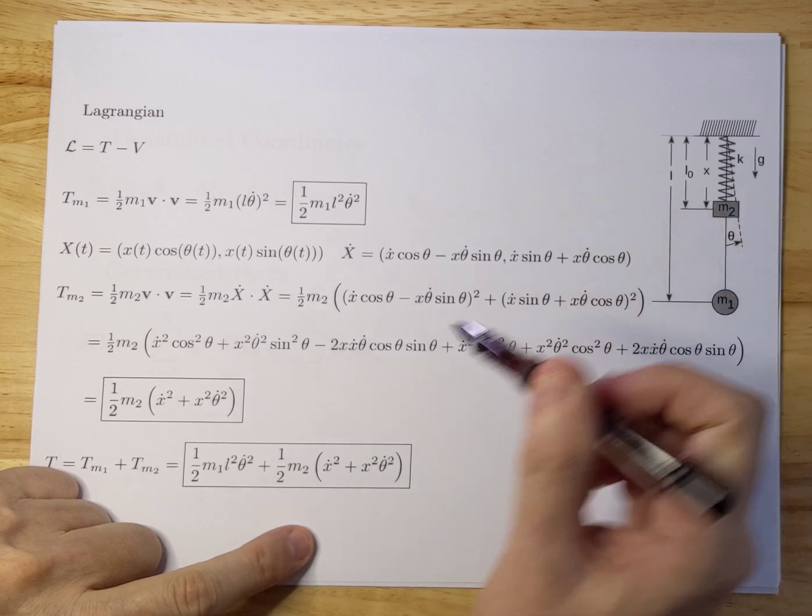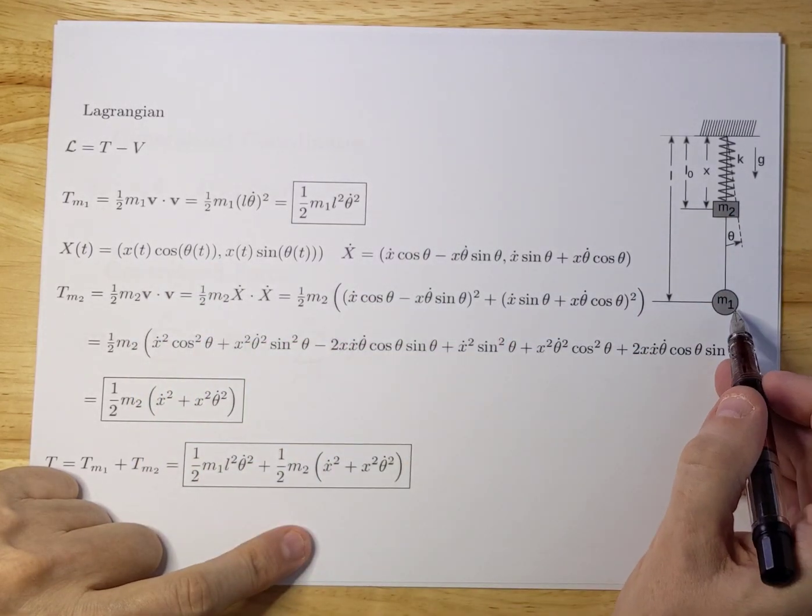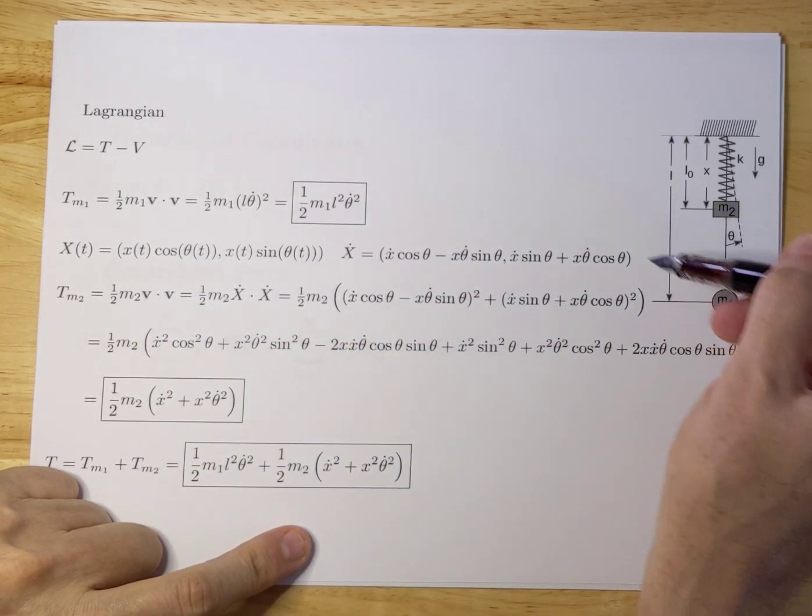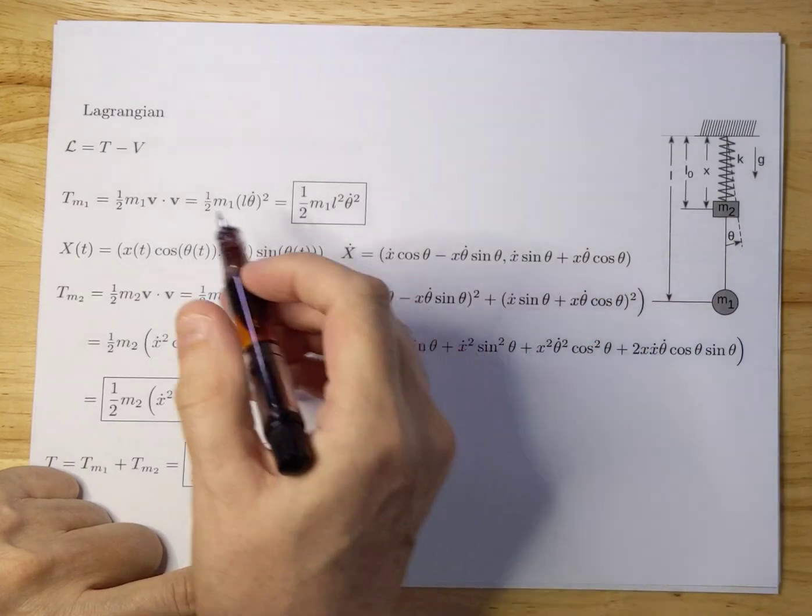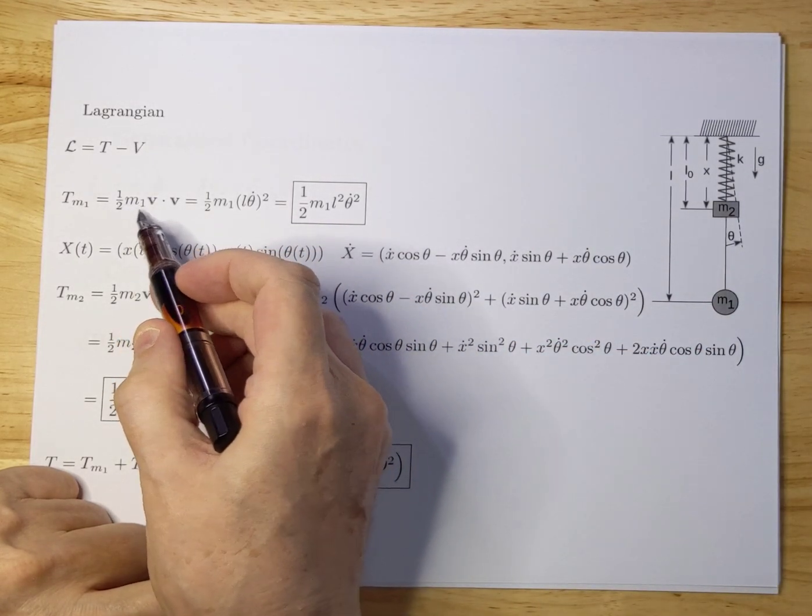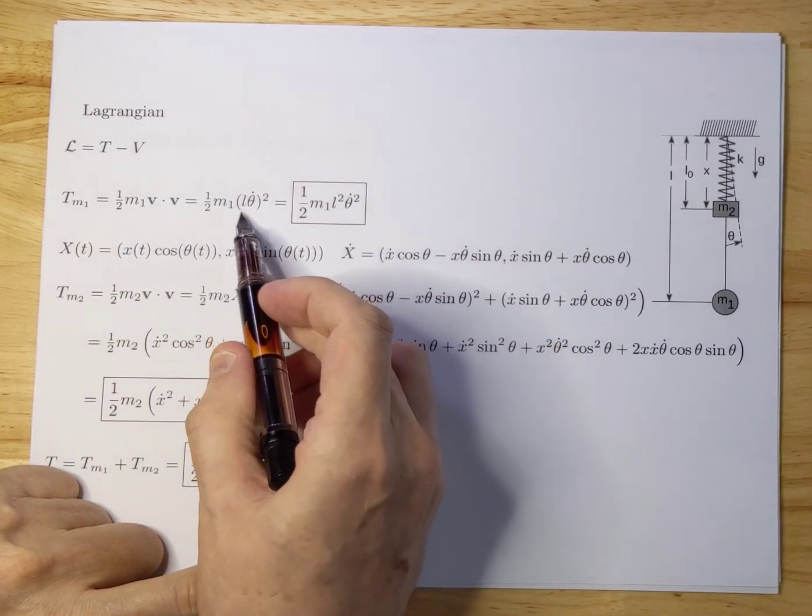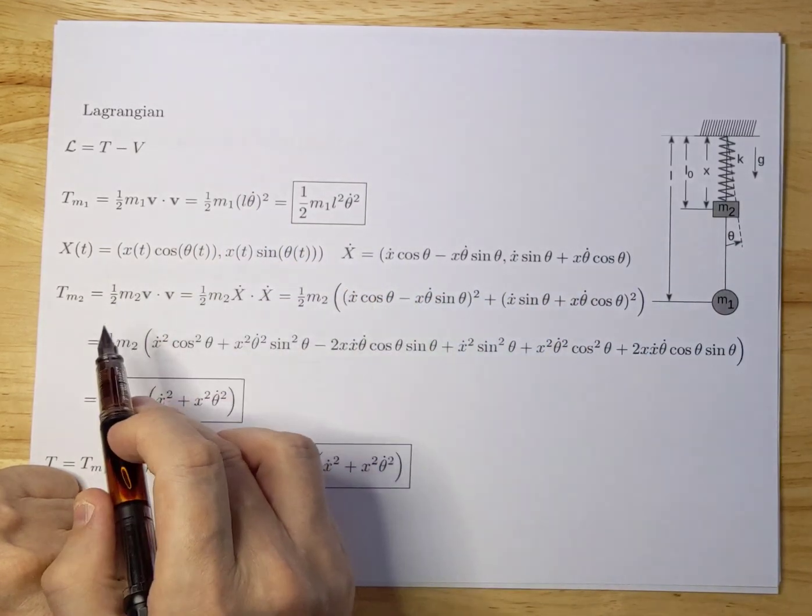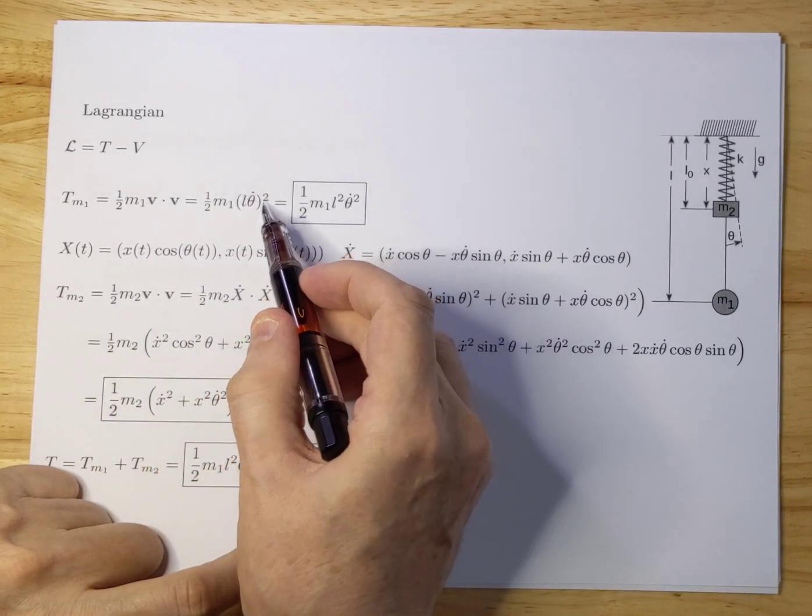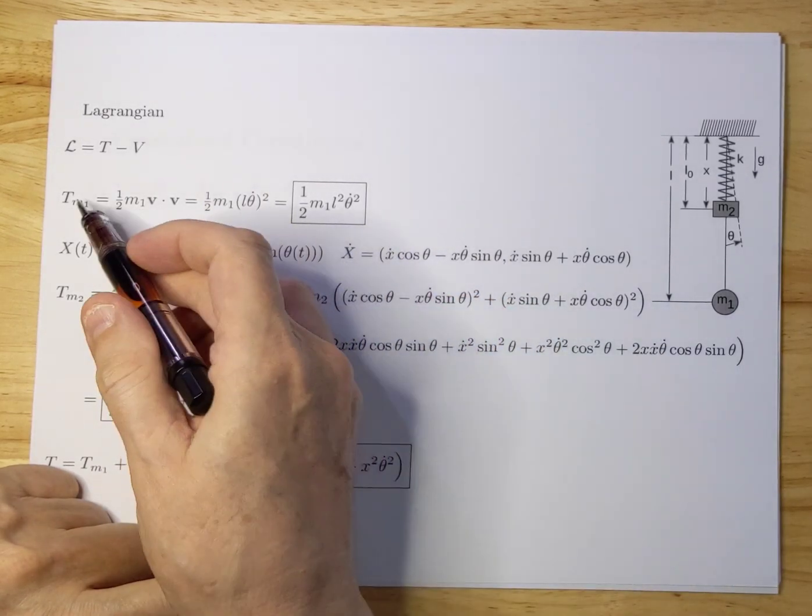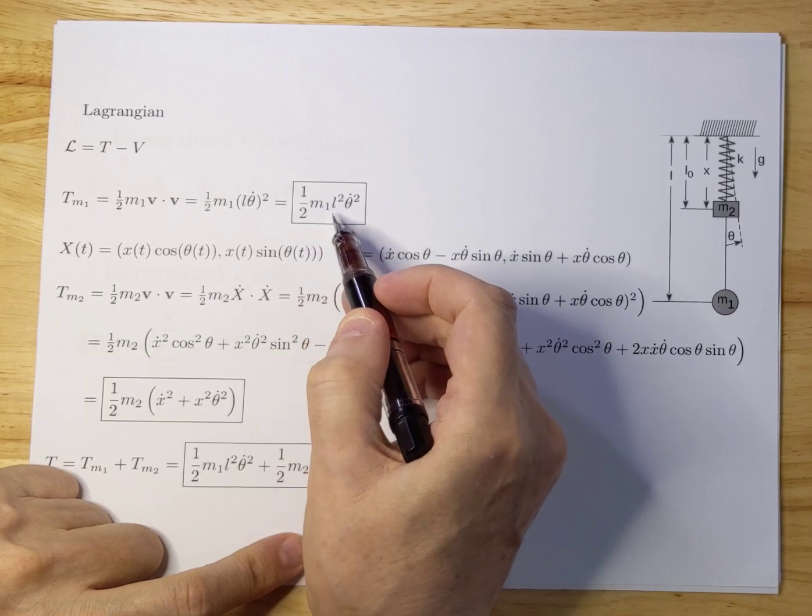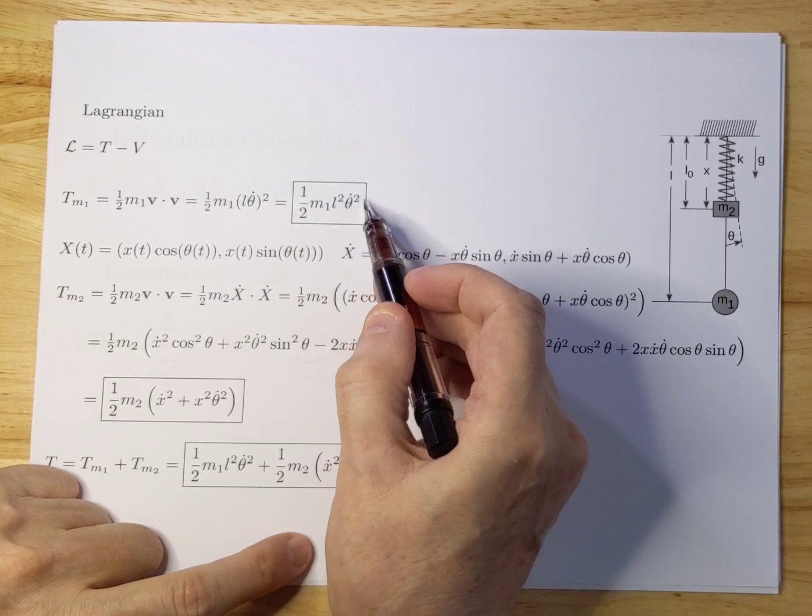Let's start with the simple one, M1, because that can only go left and right. That's half M1 V squared and V in this case is L theta dot. You have to square that and so you get your kinetic energy which is half M1 L squared theta dot squared.